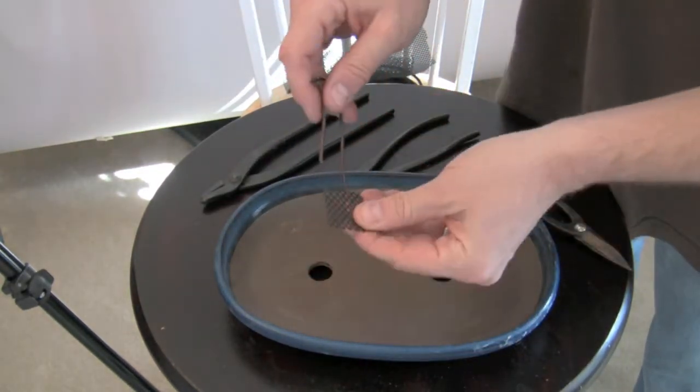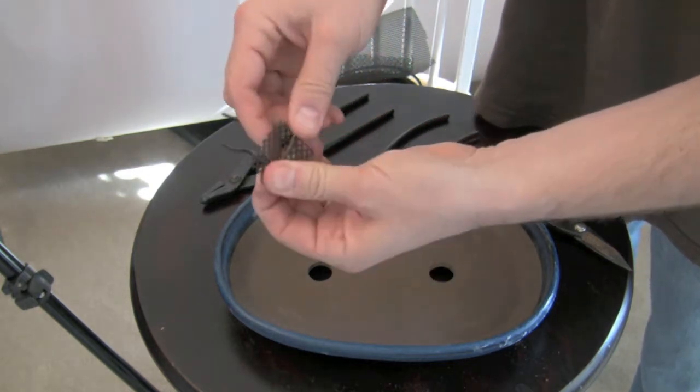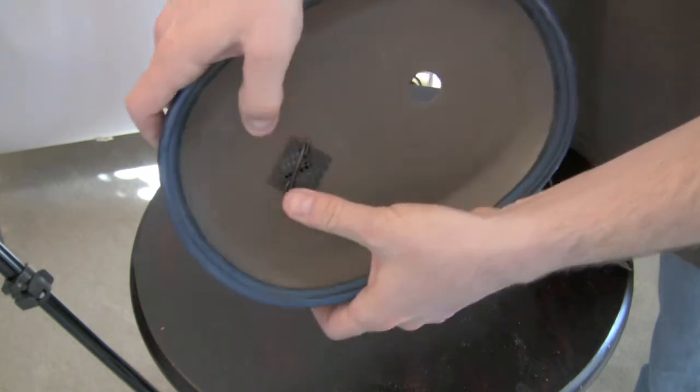Then you'll simply just take the screen, push it through two locations on the mesh. That then goes through the hole, like so.